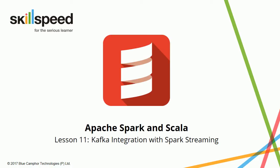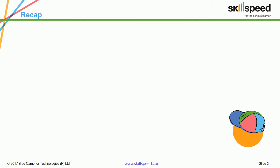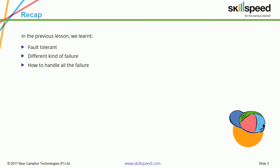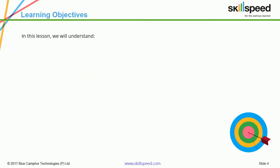Welcome to lesson number 11, module 6 of the Apache Spark and Scala course. In this lesson we will be looking at the Kafka integration with Spark Streaming. To quickly recap, in the last lesson we learned about the fault tolerance of Spark Streaming and also a basic introduction to Kafka and ZooKeeper. In this lesson we will learn about the Kafka integration with Spark, the Kafka Utilities API, and the word count example.